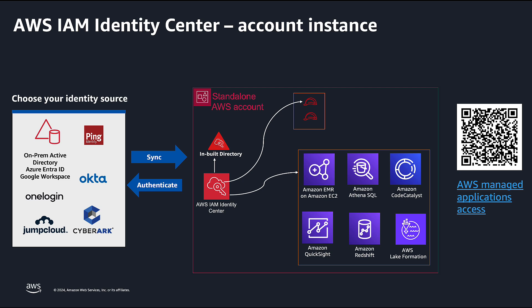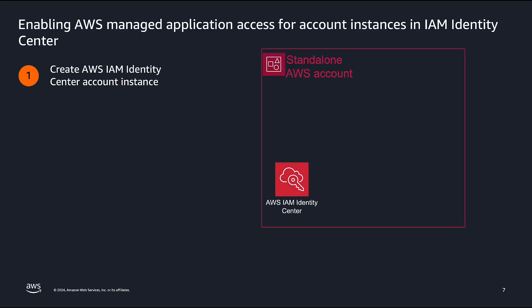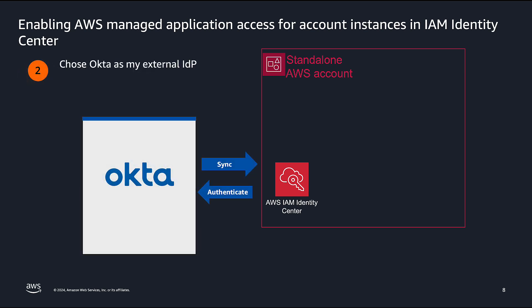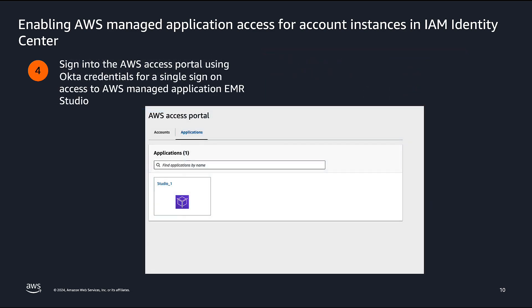You can find the list of AWS-managed applications that support account instance deployment by scanning the QR code shown on the screen. For this demo, I will create an AWS IAM Identity Center account instance, choose Okta as my external IDP, enable Amazon EMR Studio integration with AWS IAM Identity Center, and then log in to AWS Access Portal using my Okta credentials for single sign-on access to EMR Studio.